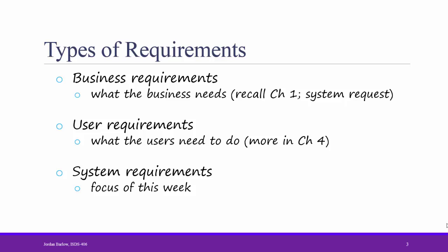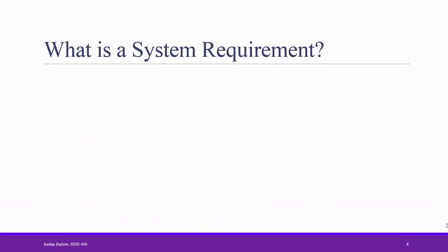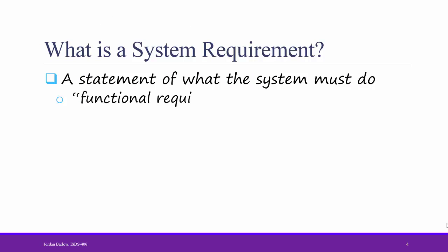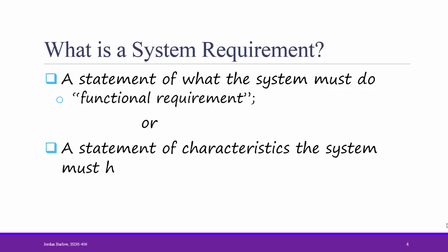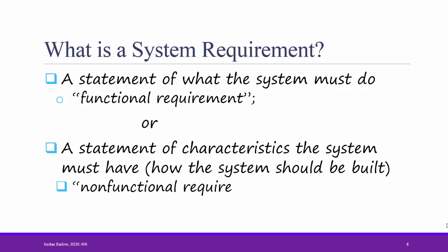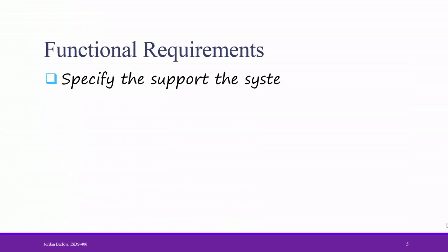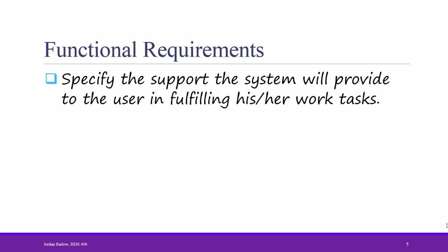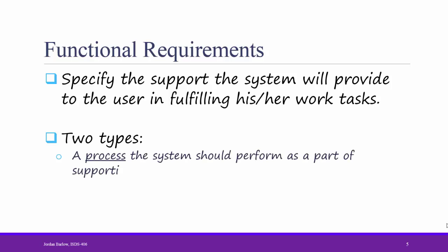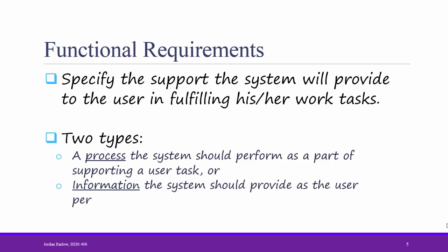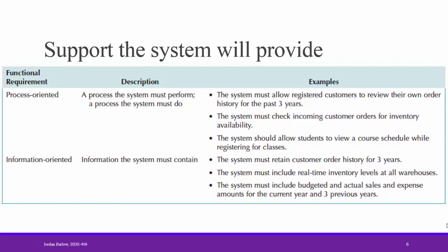Now, you might be thinking, what is a System Requirement, since it wasn't defined on that slide. A System Requirement is a statement of what the system must do — that's called a functional requirement — or a statement of characteristics the system must have, or how the system should be built, which is called a Non-Functional Requirement. Functional Requirements specify the support the system will provide to the user in fulfilling his or her work tasks. There are two types: a process the system should perform as part of supporting a user task, or information the system should provide as the user performs a task. For example, the Titanium system must support a student user in uploading an assignment, and it should also store information about the student's grades. Remember, functional requirements are what the system must do for you.